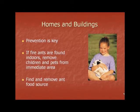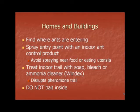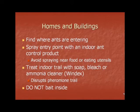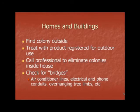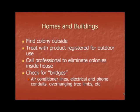Around homes and buildings, fire ant prevention is key. If fire ants are found indoors, the first step is to remove children and pets from the immediate area, and it is imperative to find and remove fire ant food sources. Find where fire ants are entering and spray the entry point with an indoor ant control product. Avoid spraying near food or eating utensils. Treat indoor trails with soap, bleach, or ammonia cleaner such as Windex — this disrupts pheromone trails. Do not use baits indoors. Once you have taken these steps, find the colony outside, treat it with a product registered for outdoor use, and call a professional to eliminate colonies inside the house. Also check for bridges such as air conditioner lines, electrical and foam conduits, and overhanging tree limbs where fire ants may have formed a bridge to enter indoors.